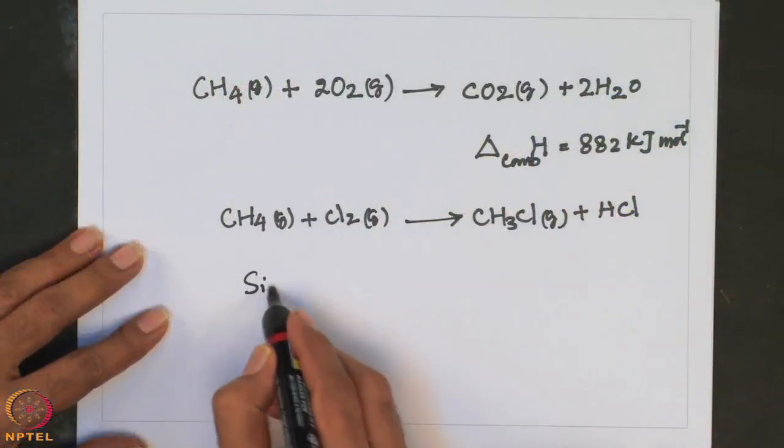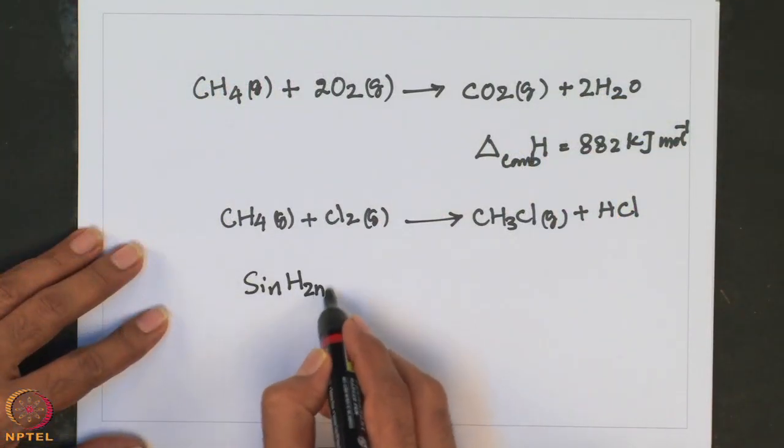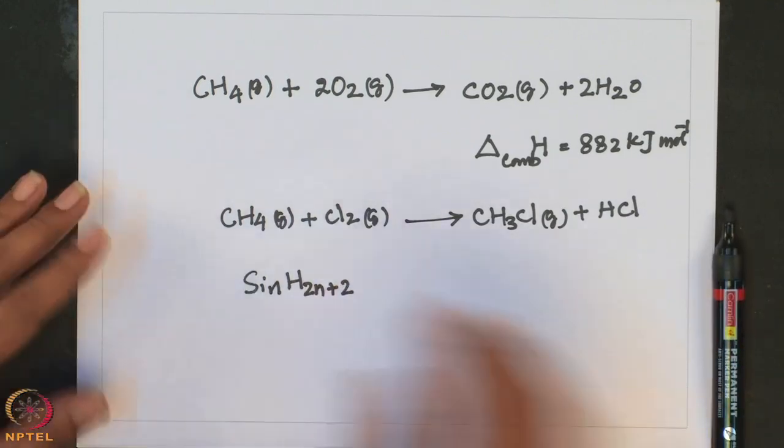Silane, in contrast, SiH4, is formed when SiCl4 (tetrachlorosilane) or tetrafluorosilane reacts with lithium aluminum hydride, and is a source of pure silicon for semiconductor applications. Silanes having the composition SinH2n+2, with straight or branched chains, are known.